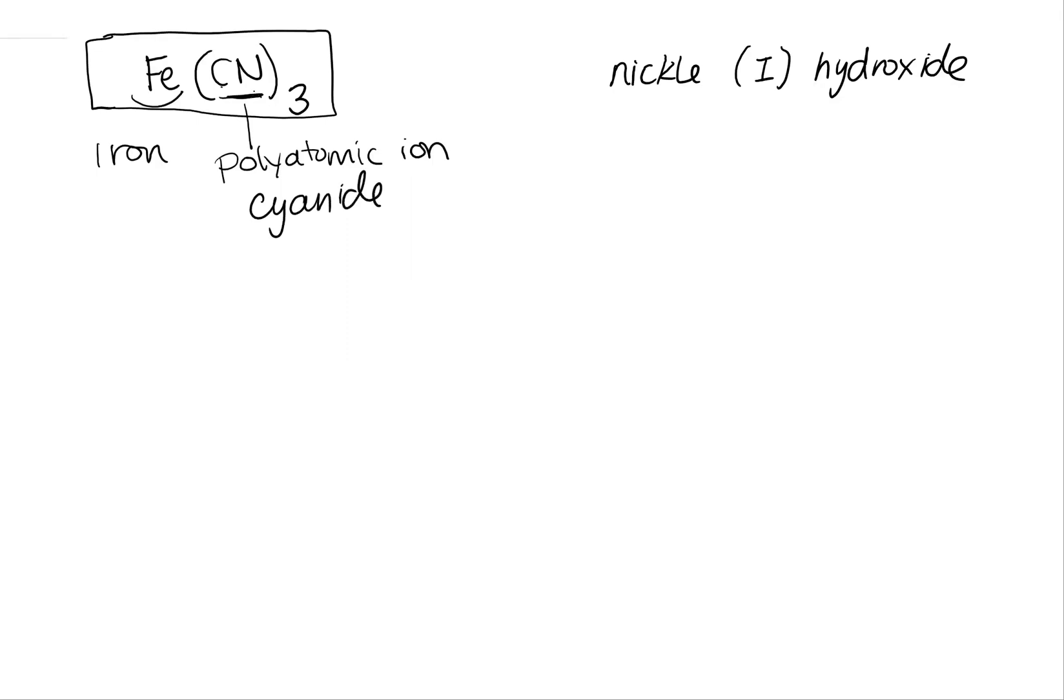And based on our rules before, just saying the cation name and the anion name should be enough, except for that tricky thing about our transition metals, that they can have different charges. So I don't know if this is iron plus two or plus three or plus four. So I'm looking at my chemical formula. I've got to figure that out first.